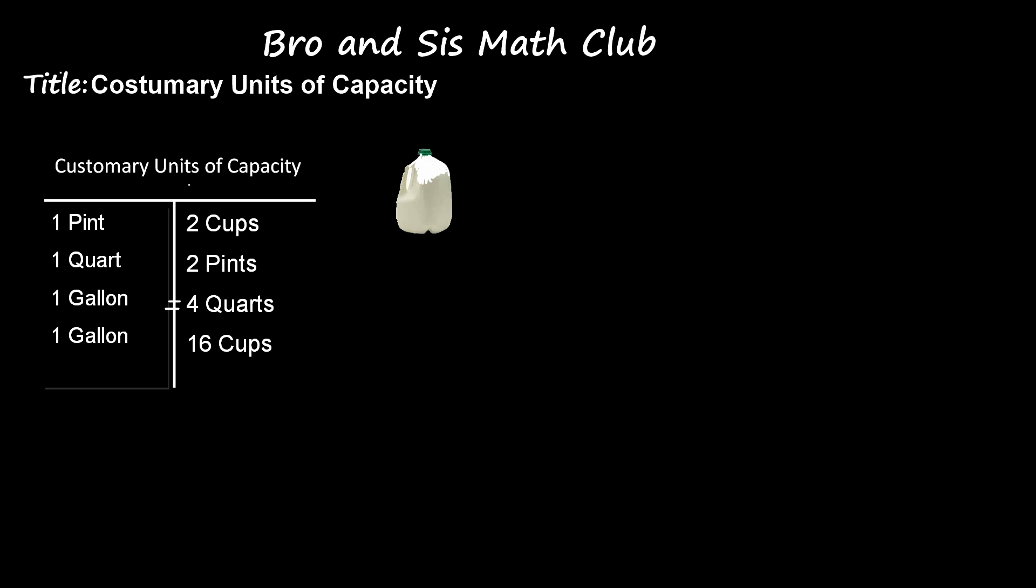They're derived from British units. So what is capacity? Capacity is the amount that something can hold or contain. In this case, we have gases and liquids. Here's a chart containing the four basic customary units of capacity, which are the cup, the pint, the quart, and the gallon.